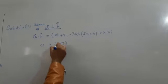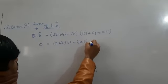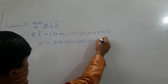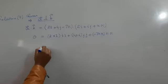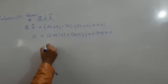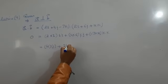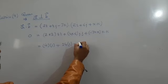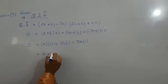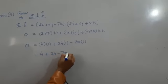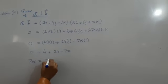Now 2 times 2, 4 times 6, minus 7x for the dot product. A·B: 2 times 2 is 4, i·i is 1, plus 4 times 6 is 24, minus 7x. This equals 0.